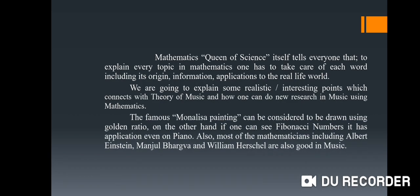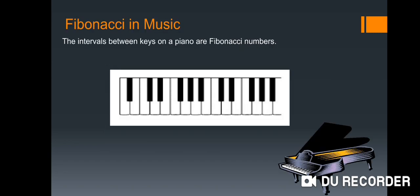The famous Mona Lisa painting as you know can be considered to be drawn using golden ratio as an application of mathematics in arts. On the other hand, if one can see Fibonacci sequence or numbers, it has an application even on pianos. Also most of the mathematicians including Albert Einstein, Manjul Bhargava and William Harshal are also good in music. So let's see how it plays an important role in music.